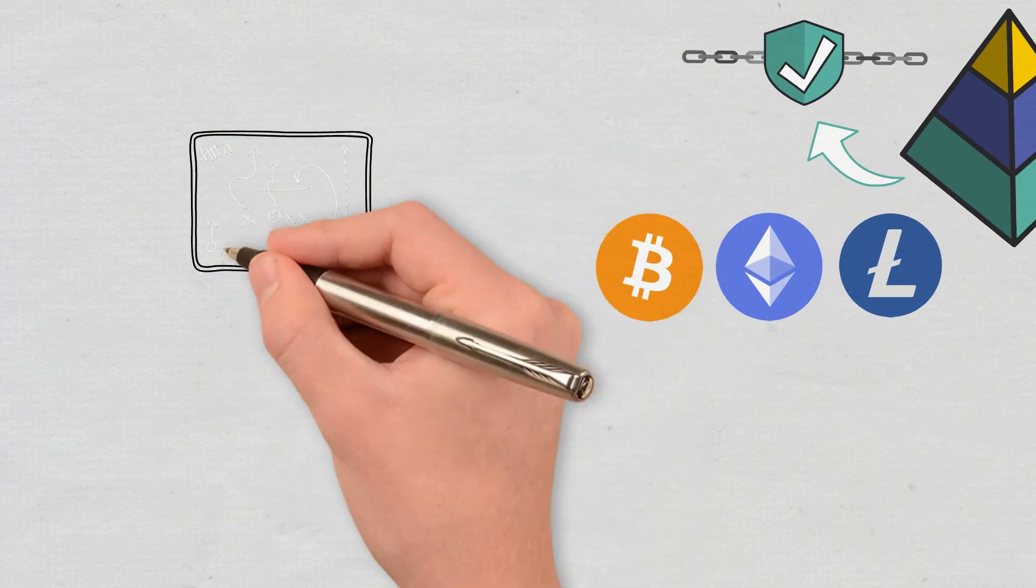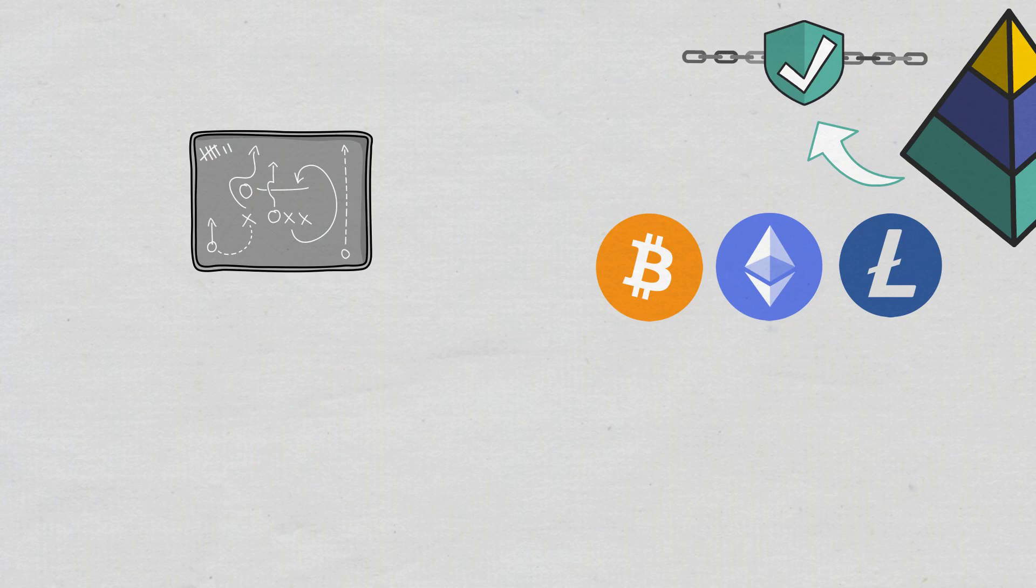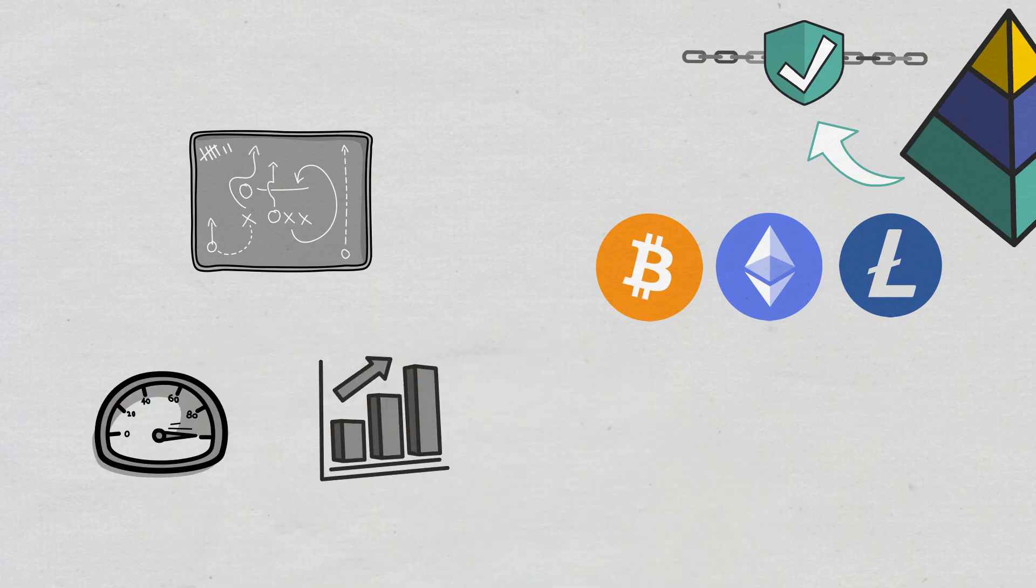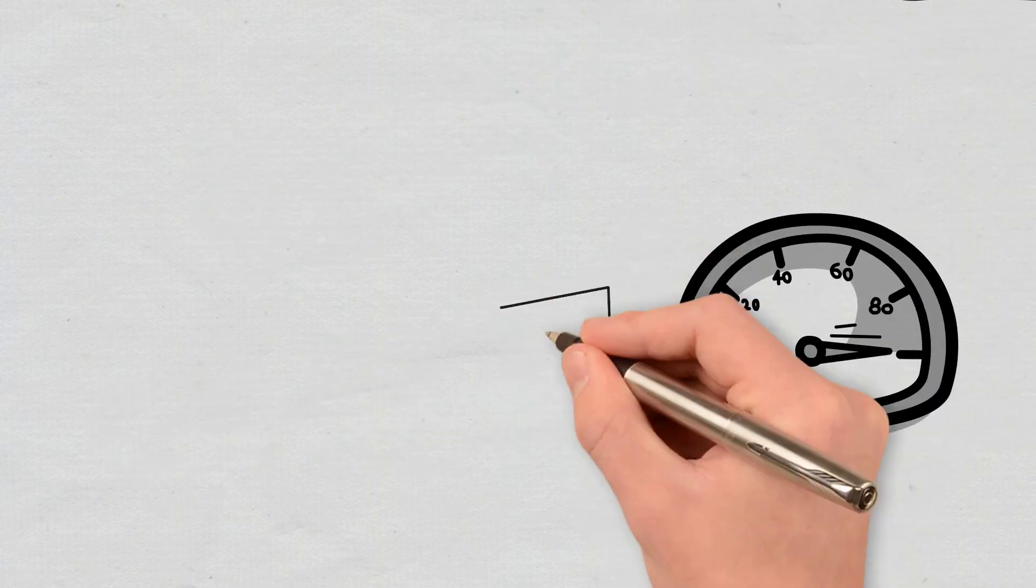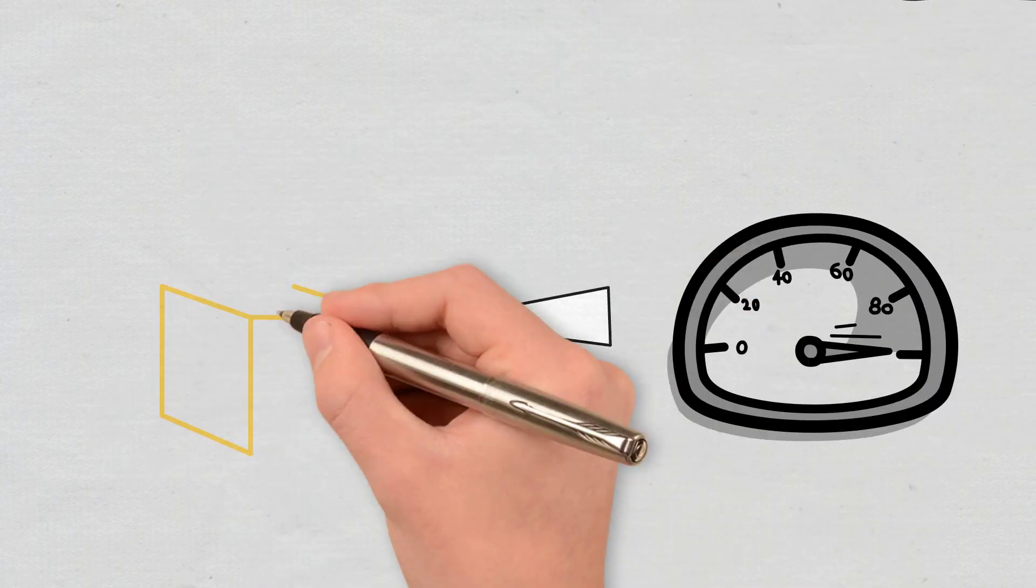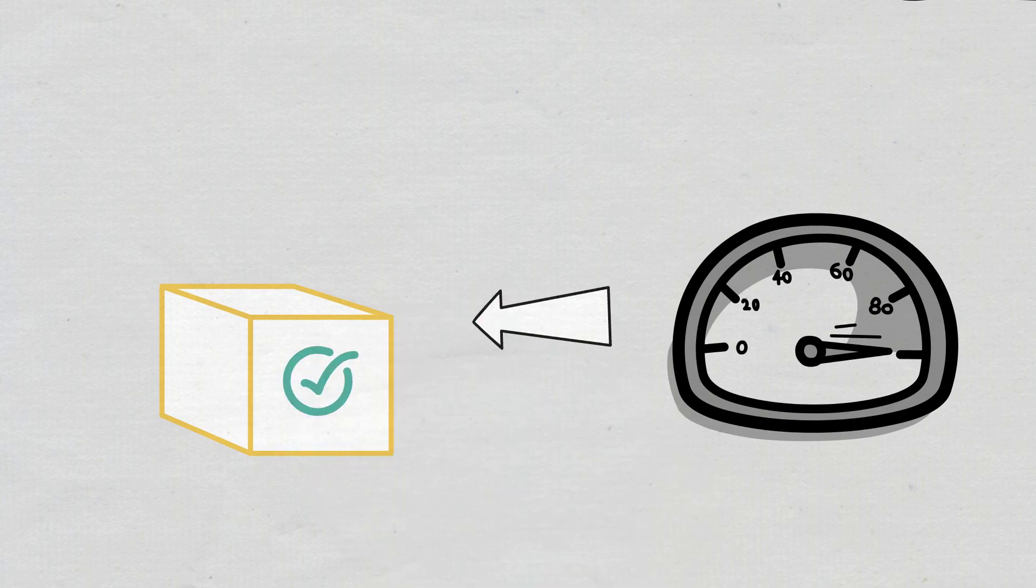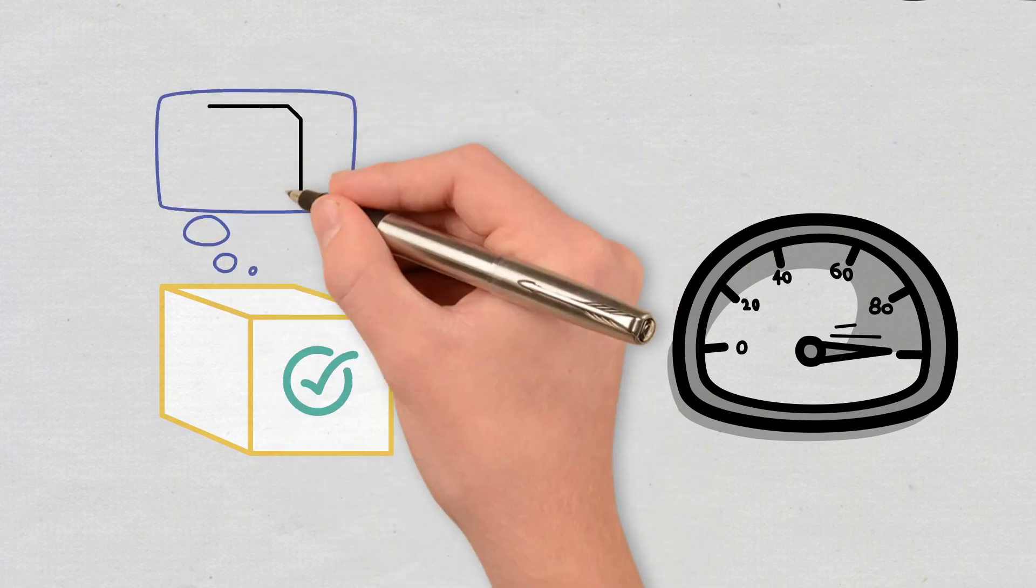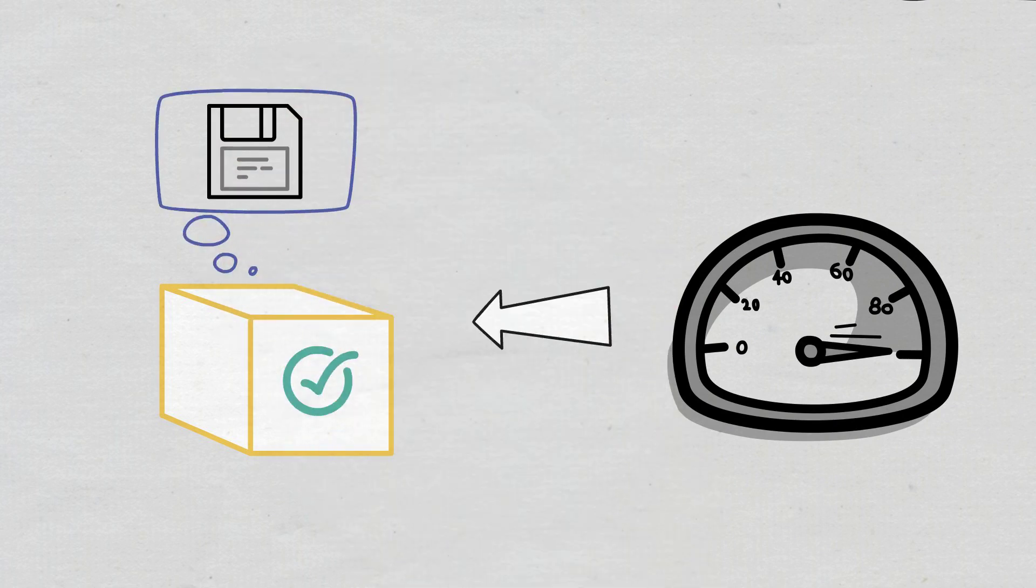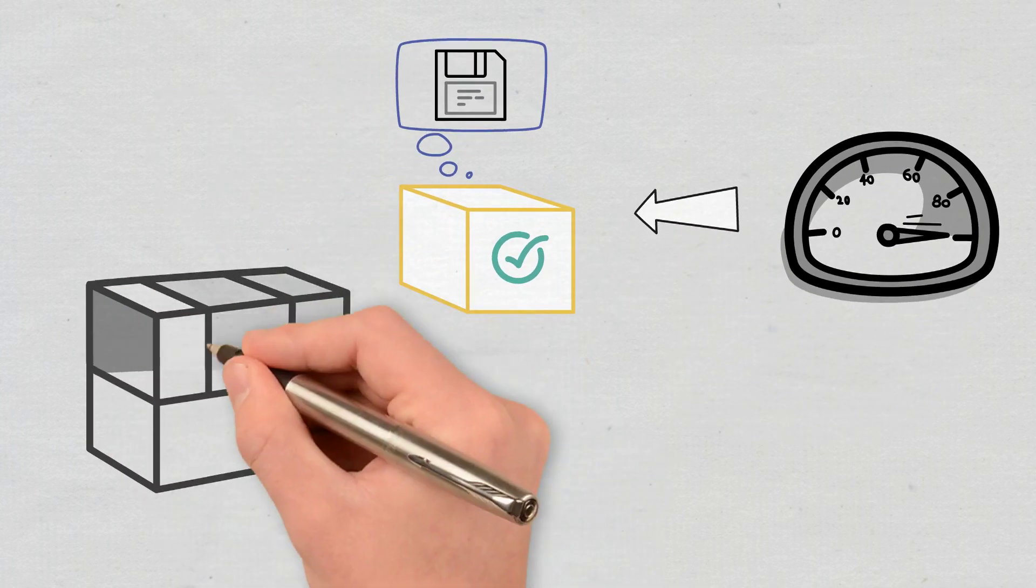When it comes to layer 1 solutions, they change the rules of the blockchain's protocol to increase its transaction speed and capacity and thus accommodate more users and data. For example, a layer 1 scaling solution could be used to accelerate the speed of block information or to augment how much data a block contains. Such solutions would then increase the network's throughput.